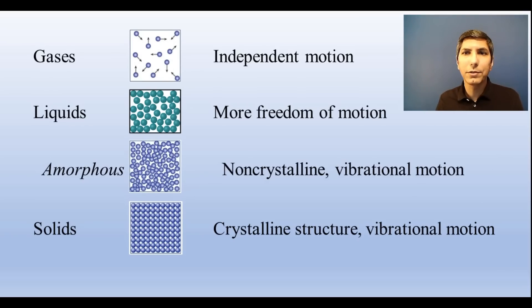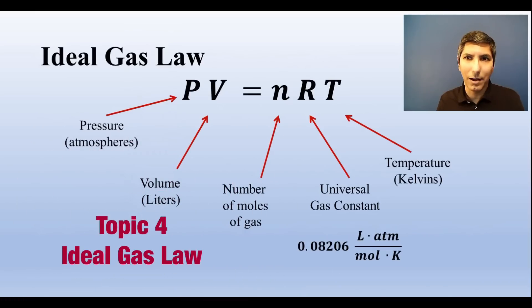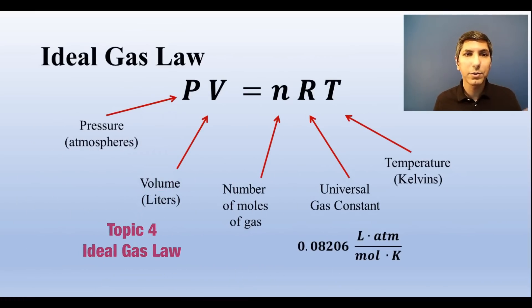Be able to use the ideal gas law, PV equals nRT. Pressure is in atmospheres, volume is in liters, n is the number of moles of gas, and T is the temperature in kelvins. R is the universal gas constant, which is equal to .08206 liter atmospheres per mole kelvin. With the constant and three of the four variables, you can solve for the unknown.